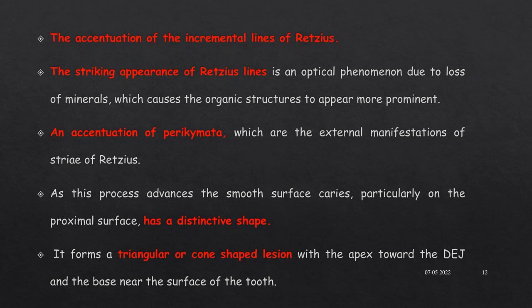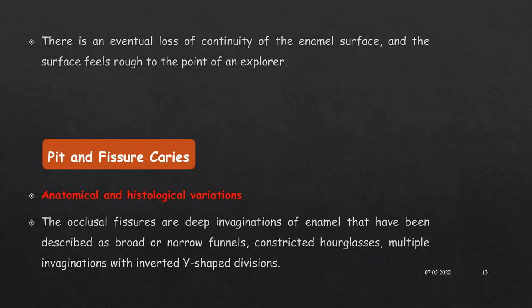The striking appearance of Retzius lines is an optical phenomenon. There is also accentuation of perichymata, which are the external manifestations of the incremental lines of Retzius. As the process advances, the smooth surface caries, particularly on the proximal surface, forms a triangular or cone shape with its apex towards the dentino-enamel junction and the base towards the surface of the tooth. There is eventual loss of continuity of the enamel surface, and it feels rough when an explorer is moved along the surface.